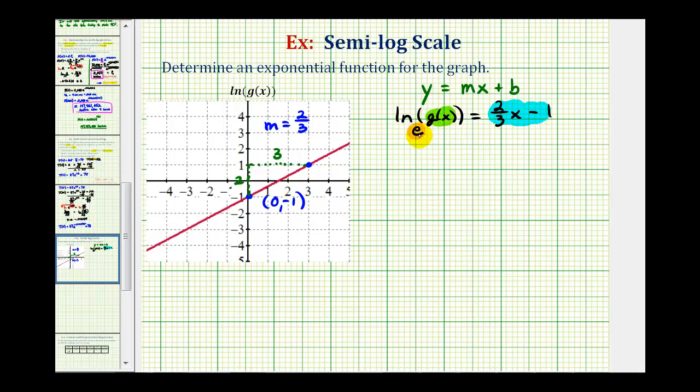Starting at the base and working around the equal sign, we can form the exponential equation: e^((2/3)x - 1) = g(x).